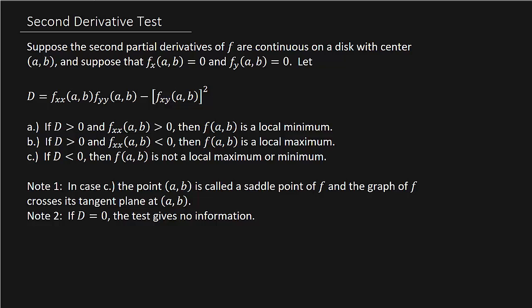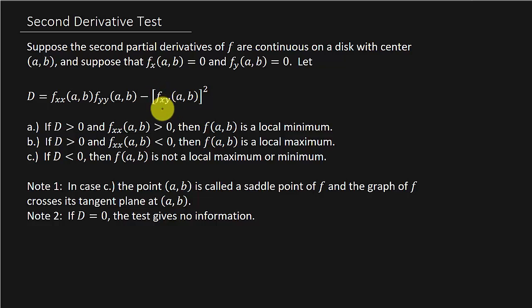We're going to use the second derivative test. Suppose the second partial derivatives of F are continuous on a disk with center AB, and suppose that the partial of F with respect to X and the partial of F with respect to Y at AB are both equal to zero. Let D equal the second partial of F with respect to X times the second partial with respect to Y, both evaluated at AB, minus the mixed partial of F with respect to X then Y at AB, squared. That's what D equals.